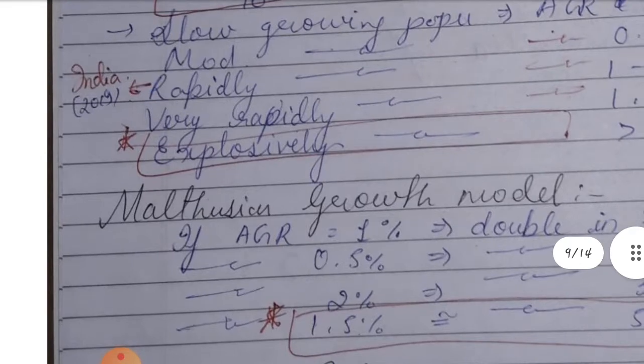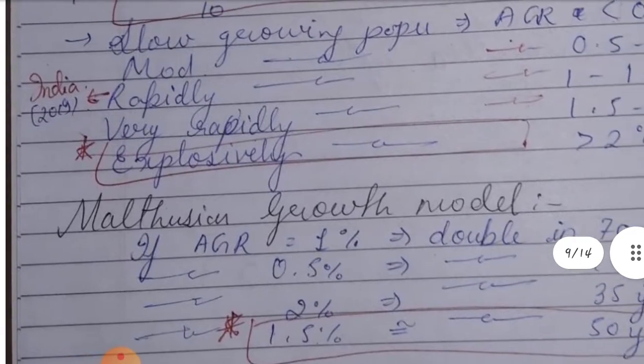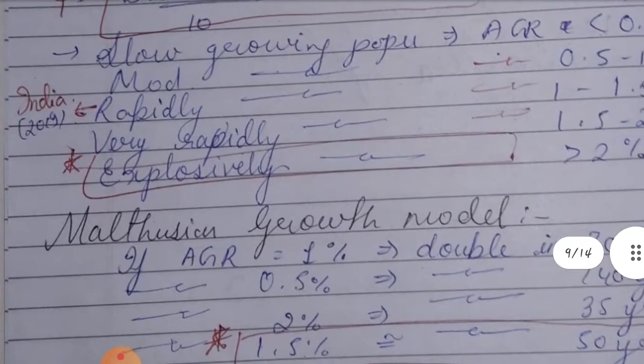In India, according to 2019 data, we have a rapidly growing population status, falling in the 1–1.5% AGR range.